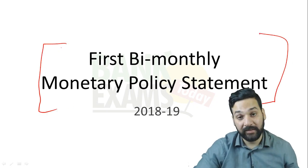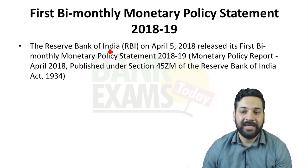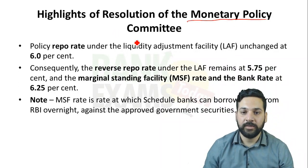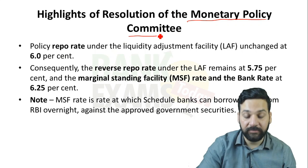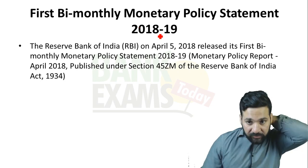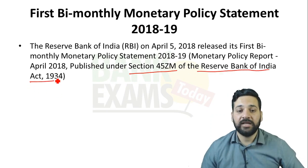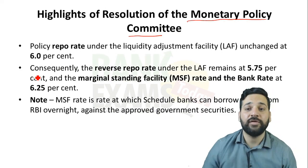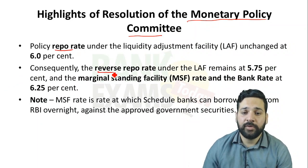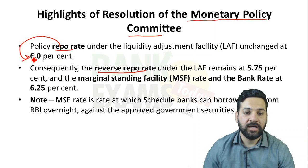Today I'm going to discuss the first bi-monthly monetary policy statement released by the RBI. The bi-monthly monetary policy statement is released by the Monetary Policy Committee, which has six members including the Governor of the Reserve Bank of India. It is released under Section 45ZM of the Reserve Bank of India Act 1934. The repo rate and reverse repo rate were kept unchanged.